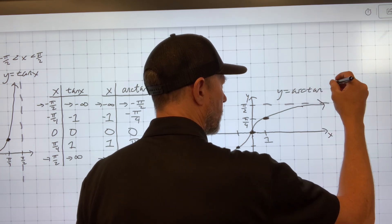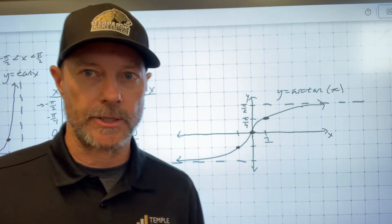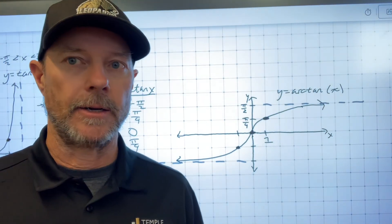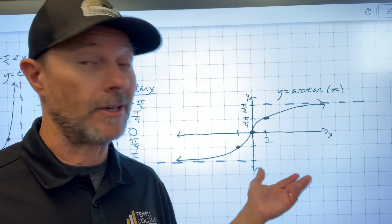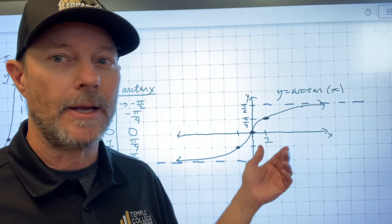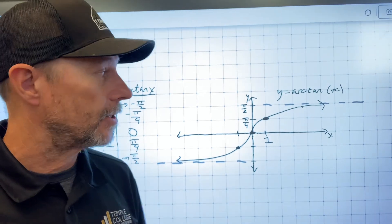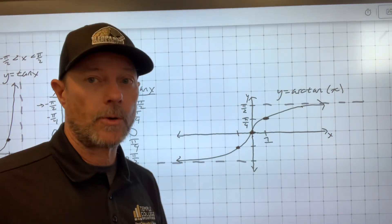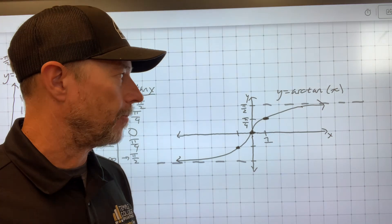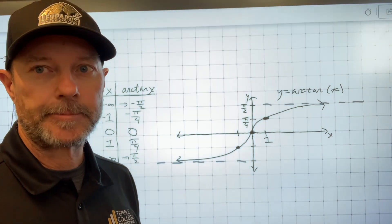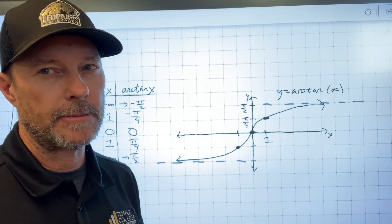Of the three inverse functions — arc sine, arc cosine, and arc tangent — this one turns out to be really important. In calculus, we keep running across it over and over again, so this is one you need to practice and understand to be ready for calculus. Math made simple — Simpson Math.